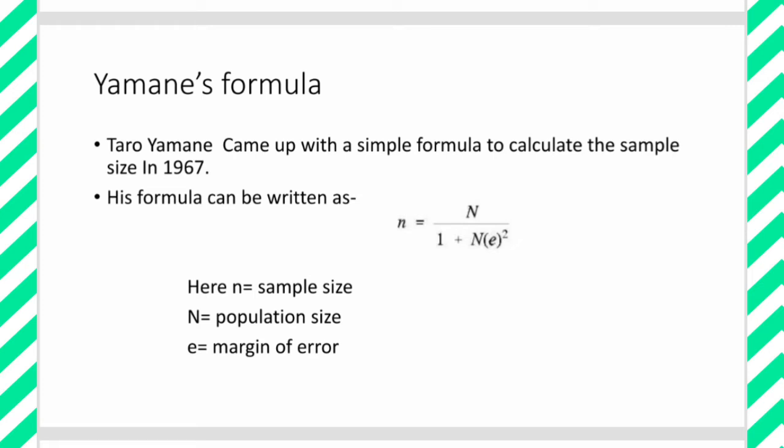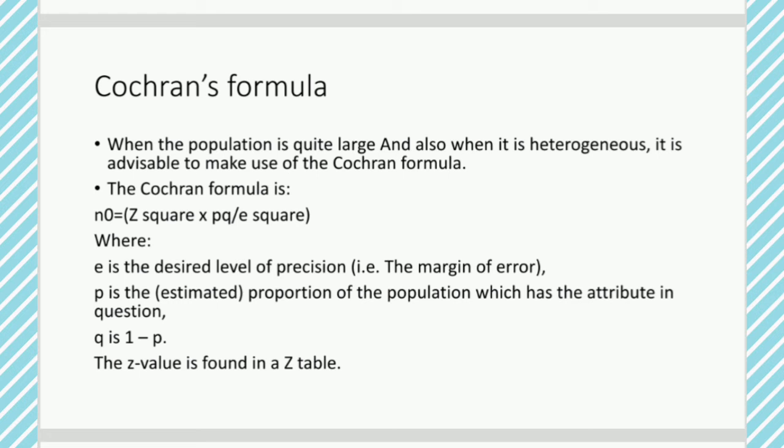Next up is Cochran's formula. Cochran's formula is basically used in situations when the population is quite large and when the units of the population are heterogeneous. In such a situation, it is advisable to make use of the Cochran formula. The Cochran formula is defined as: n₀ = Z²PQ / e², where e is the margin of error or the desired level of precision.